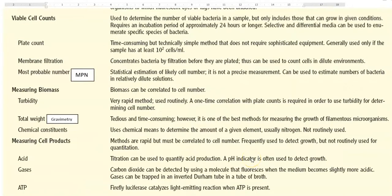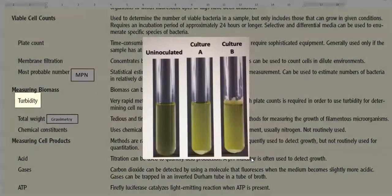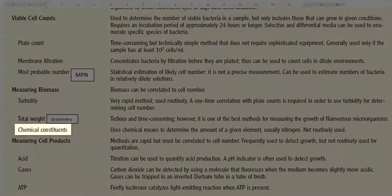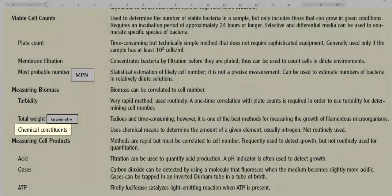The next method is measuring of biomass. Here biomass refers to the total weight or total quantity of the cell. Here it is correlated there to the cell number. Three different methods have been used under the biomass measurement. It includes turbidity, total weight which is also referred as a gravimetry method of estimation, and the third one is measuring the chemical constituents of the cell.